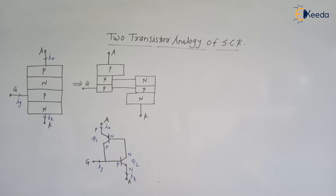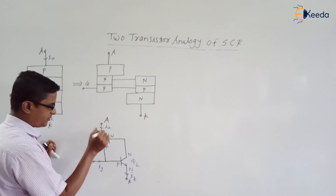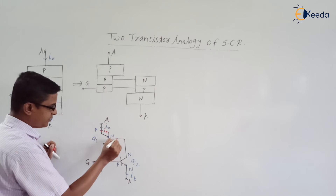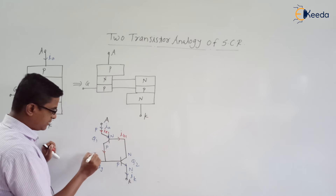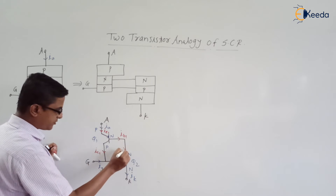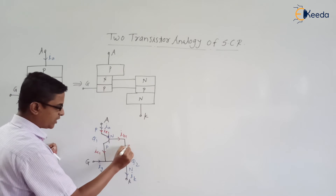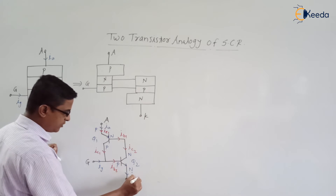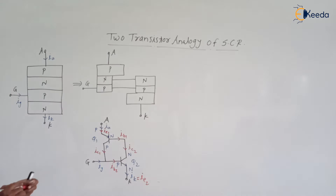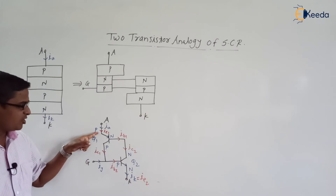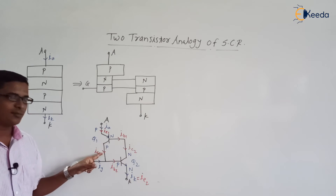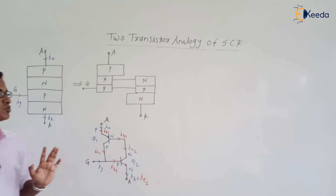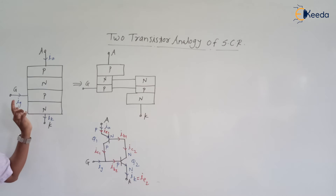The current flowing through the emitter terminal of the first transistor is IE1. This current is IE1, this current is IB1, and this current is IC1. This is the collector of the second transistor, so we write it as IC2. This is IB2, and this is IK which is equal to IE2. So initially we had a PNPN structure — the actual structure of the SCR — and we have divided it into two transistors: PNP and NPN.